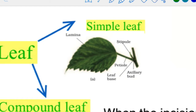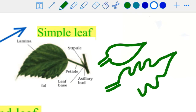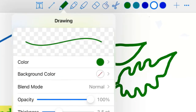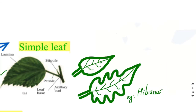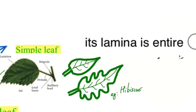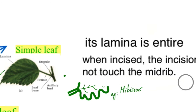In a simple leaf, the leaf lamina is entire. If the leaf lamina is incised, the incision does not touch the midrib. So these types of leaves are called simple leaves. Example: Hibiscus. To define a simple leaf: lamina is entire, and if there is any incision, it does not touch the midrib.